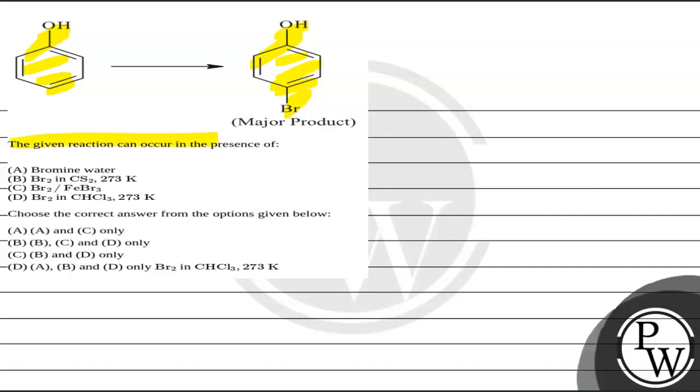So the given reaction can occur in the presence of, we have been provided with four different reagents. We have to pick which of the correct answers from the given options. So either it is A or C reagent, B, C or D, B or D, or A, B or D.